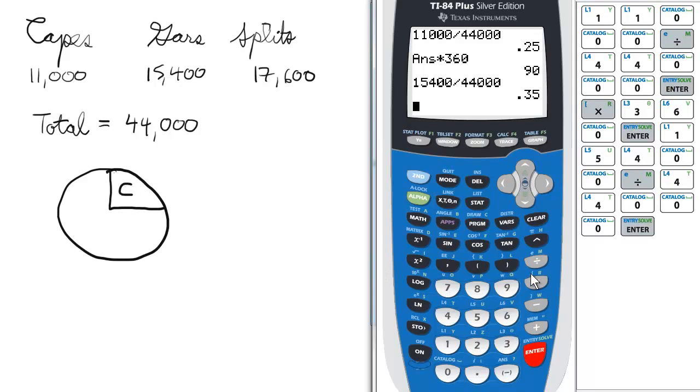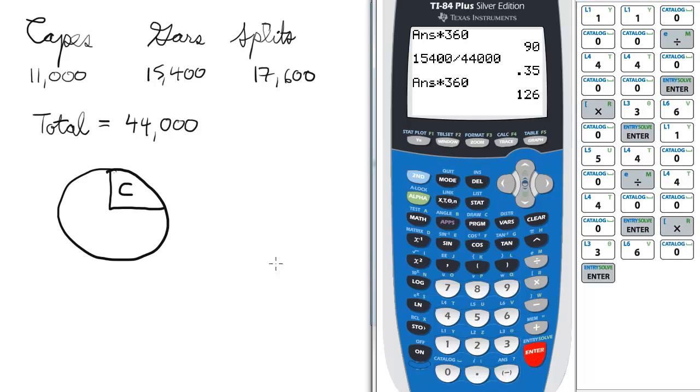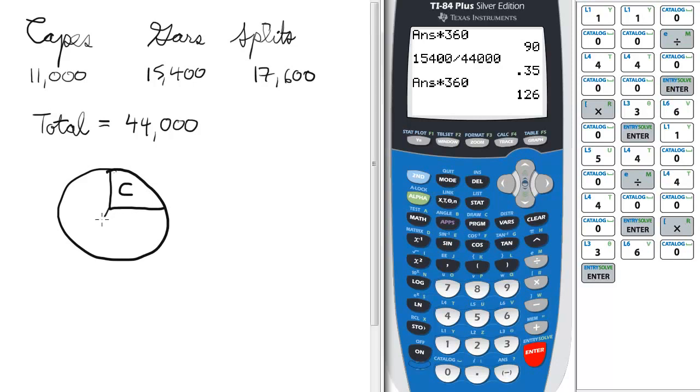If you wanted to find the angle measure, again, multiply it by 360, you have 126 degrees. So that's slightly bigger than a 90 degree angle. I would say it's something kind of like this, so this would be the Gars.